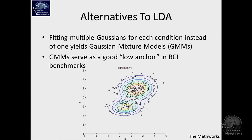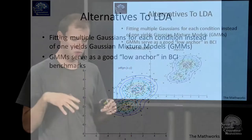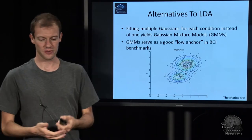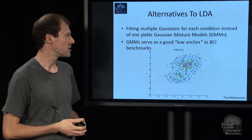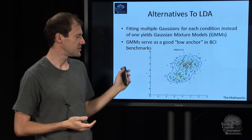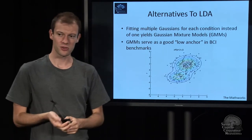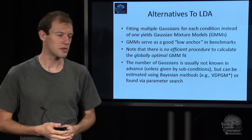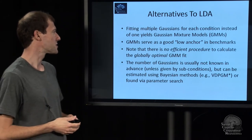Usually you have too high-dimensional data. In the case of CSP it's not quite as bad, but you typically have outliers, and GMMs are easy to break with outliers as well. You typically don't have enough observations — just a couple of trials. But still, it's a method you can throw at the data, and it's in the toolbox.